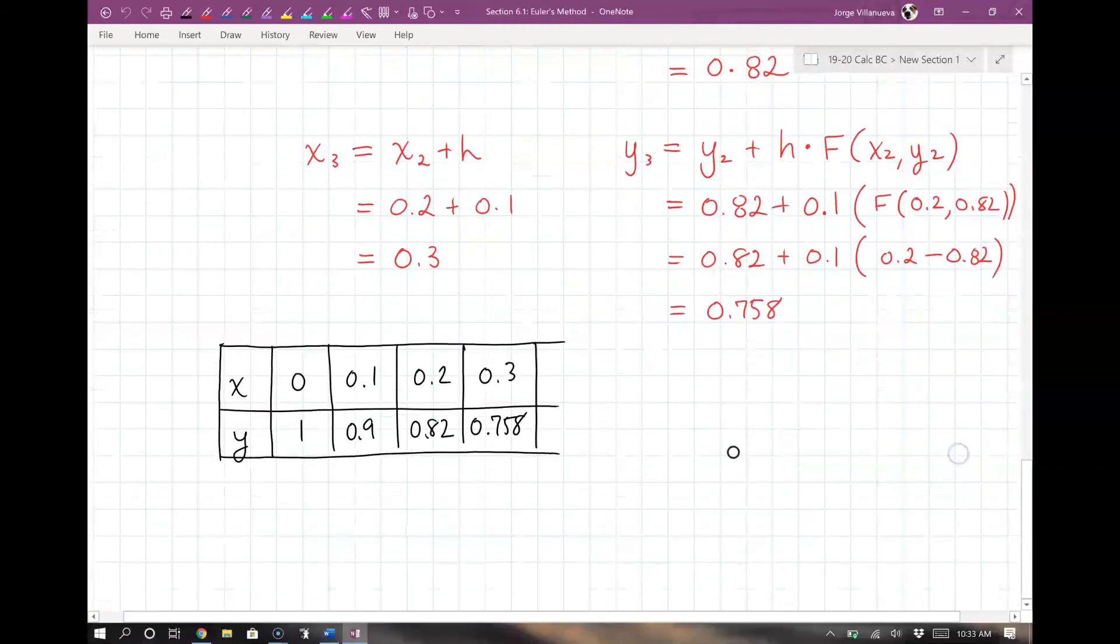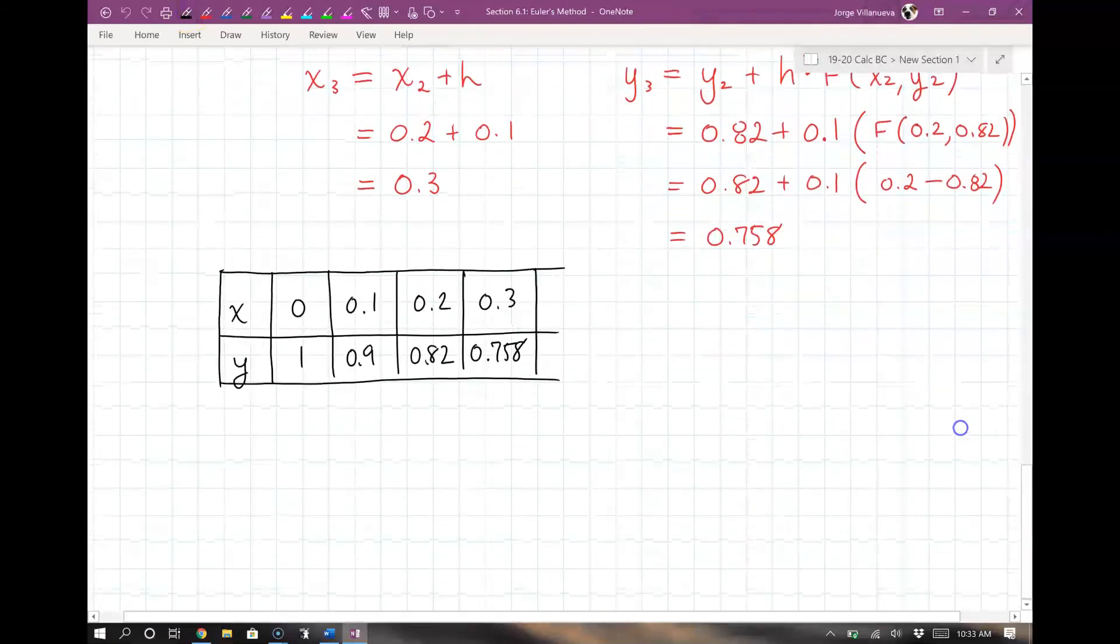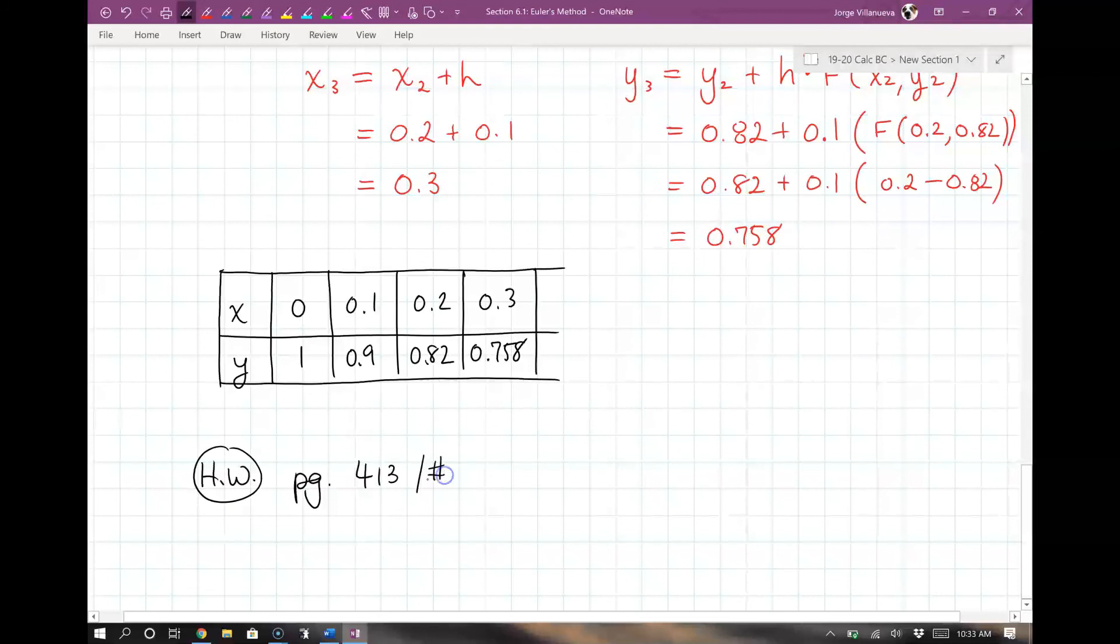All right, so let's go ahead and write down the homework. Your homework is going to be on page 413, numbers 73 to 75. I know that's not a lot, but I want to make sure you guys only do n equal to 4 iterations, not 10, or else you're going to be doing 30 different calculations.